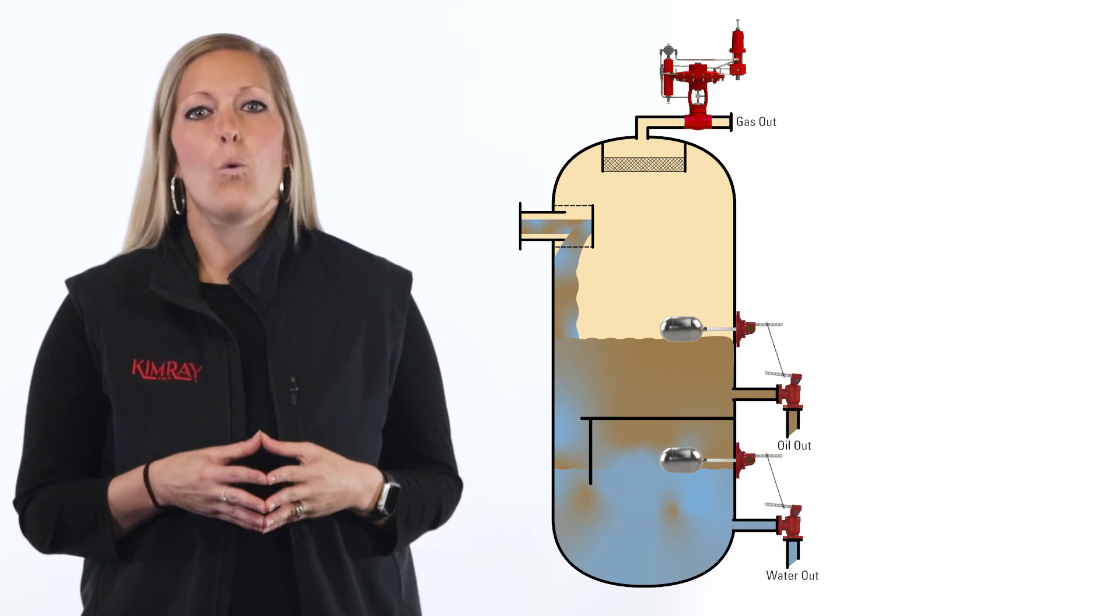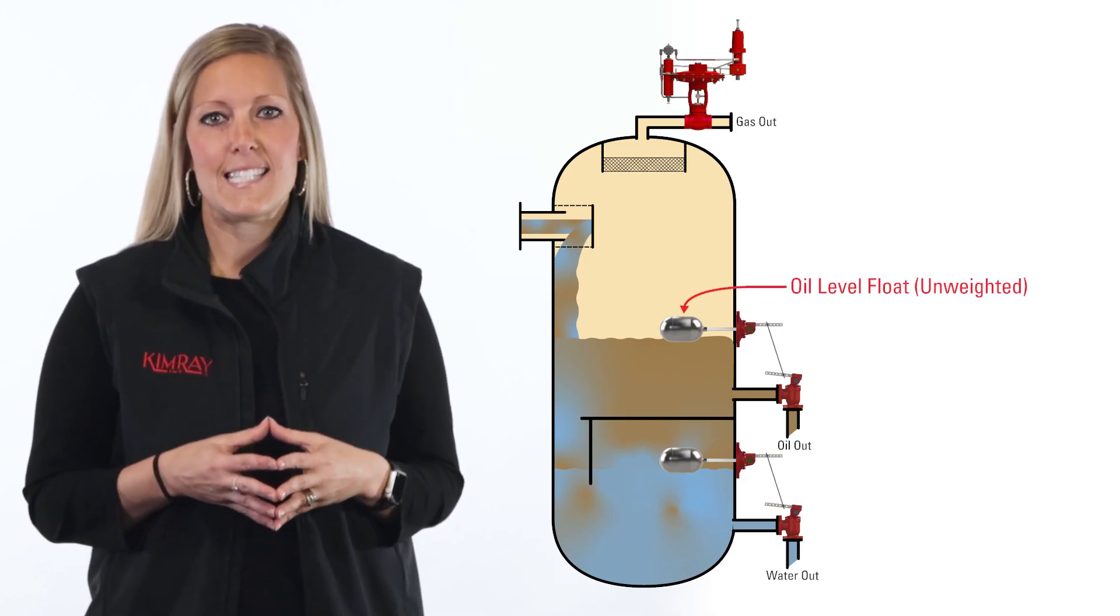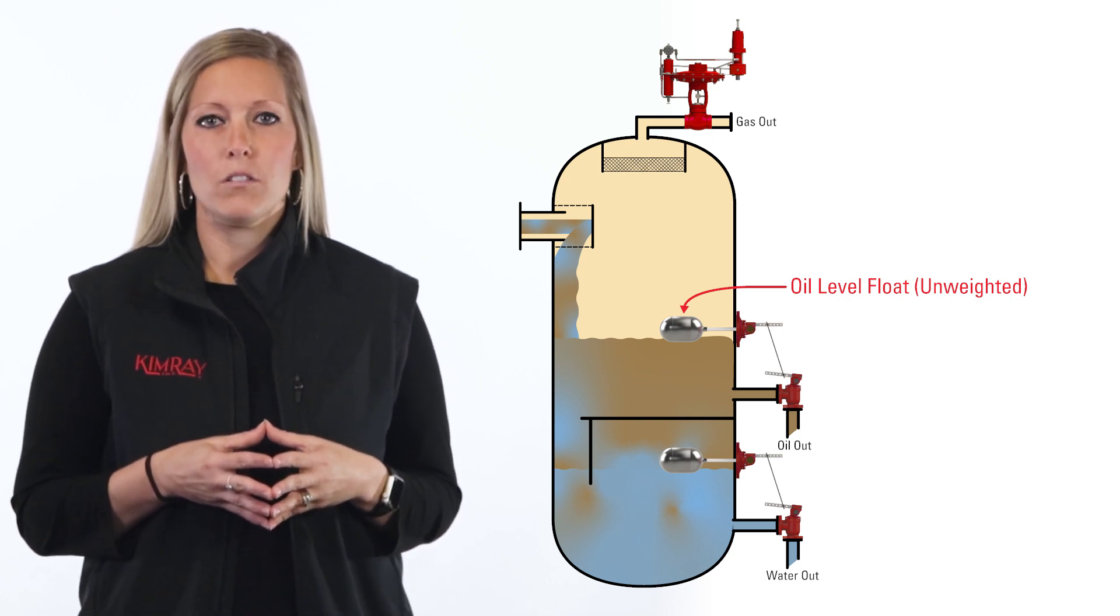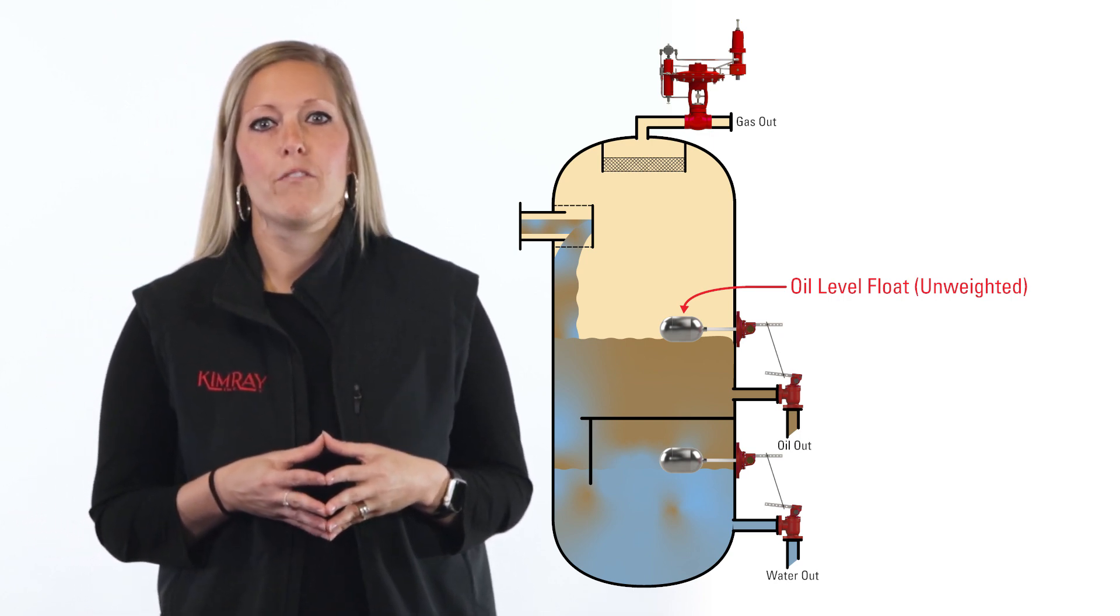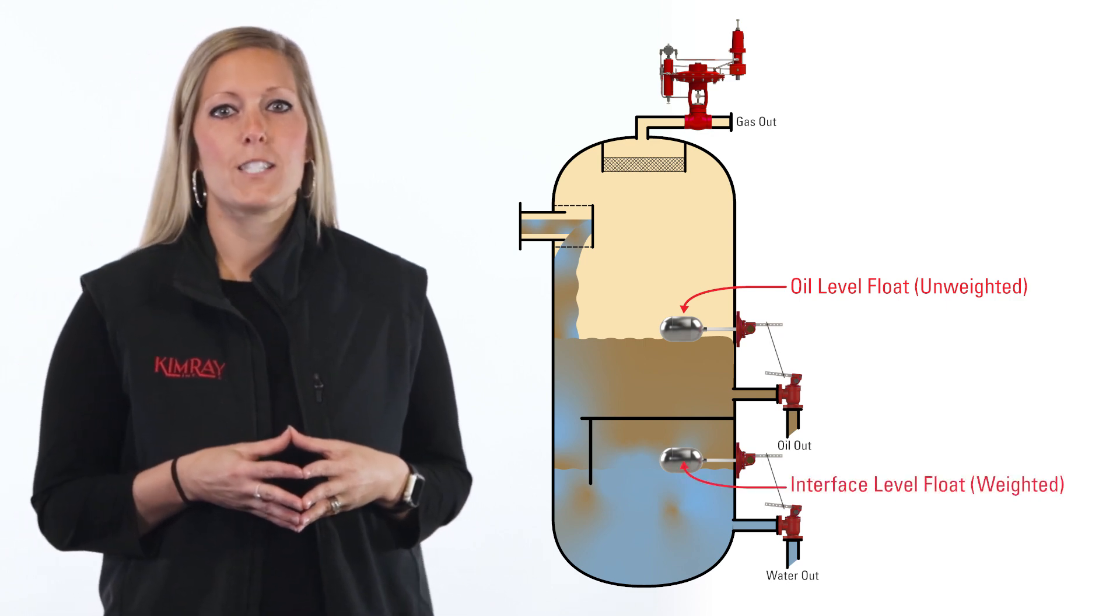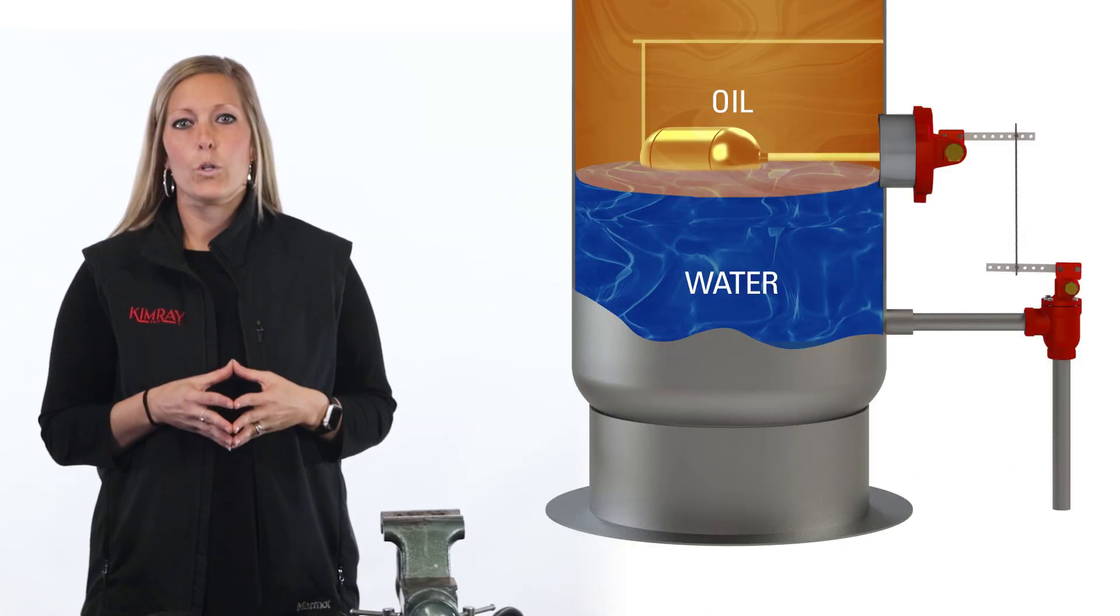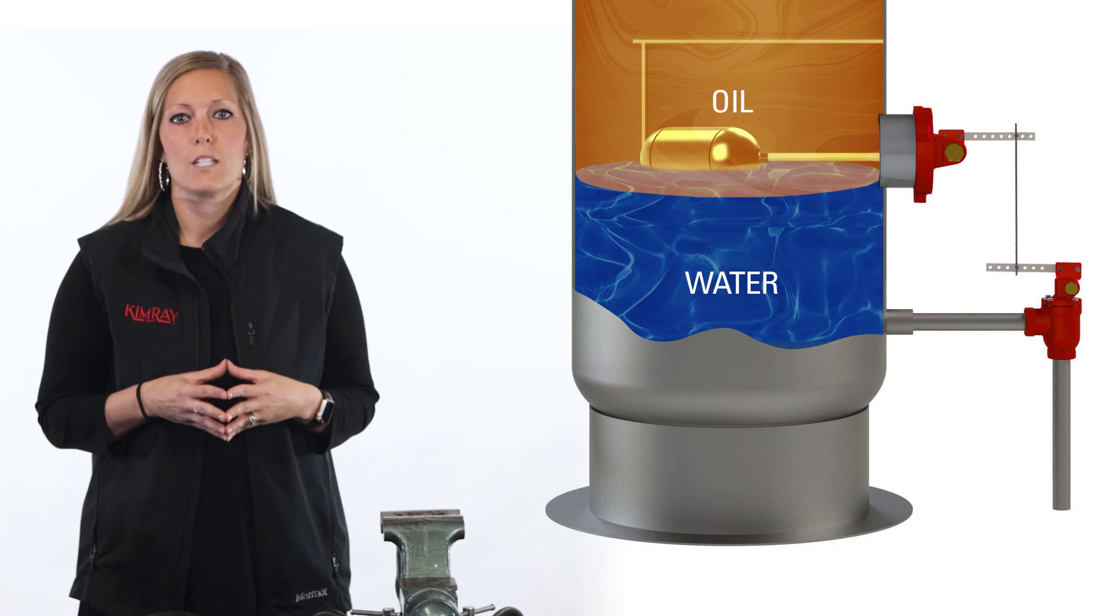On an oil and gas separator, producers often use two float-operated liquid level controllers. One will have an empty float that sits inside the vessel at the top of the oil, which will open the dump valve when the level reaches a set height. A second float will sense the interphase level. In order to sink through the oil, this float must be weighted.